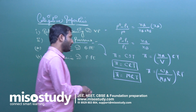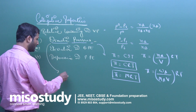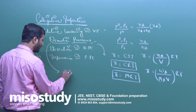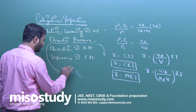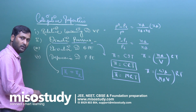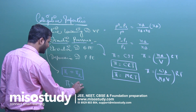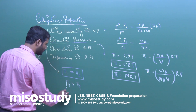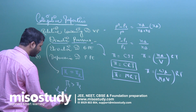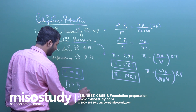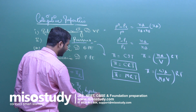Two solutions having the same osmotic pressure are called isotonic solutions, where pi_1 = pi_2. If the first solution has higher osmotic pressure, it is known as a hypertonic solution, and the other is hypotonic.